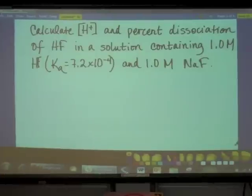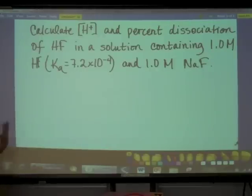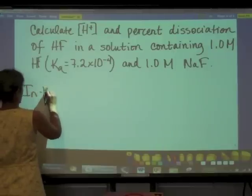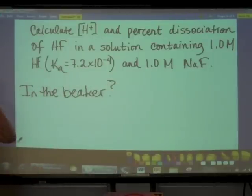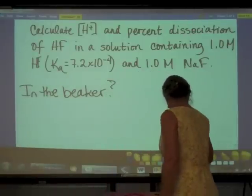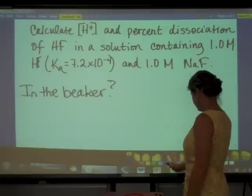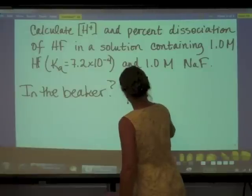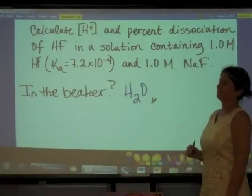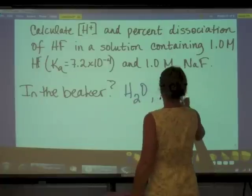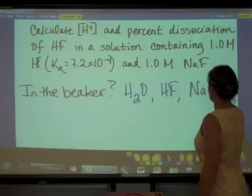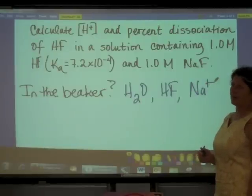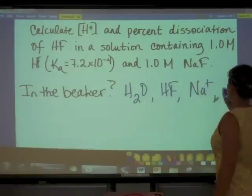The first thing we need to do, because this is a mixture, is figure out what is in the beaker. We've got water. We've got hydrofluoric acid — because it's a weak acid, it's pretty much all associated. We also have sodium ion, coming from the sodium fluoride salt, and we have fluoride ion in solution.